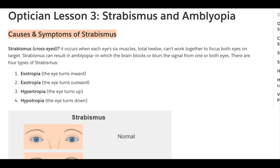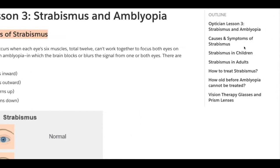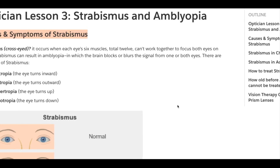Optician Lesson 3: Strabismus and Amblyopia. In this lesson, we'll be learning about causes and symptoms of strabismus, strabismus in children, strabismus in adults, how to treat strabismus, how old before amblyopia can be treated, vision therapy glasses, and prism lenses.